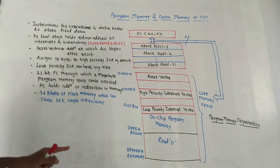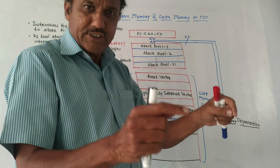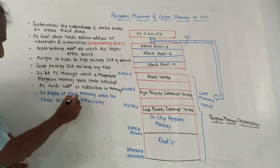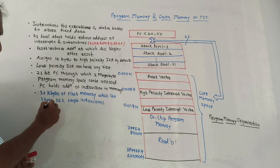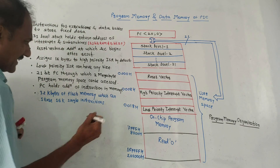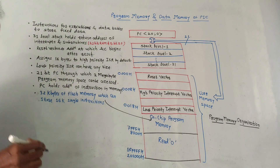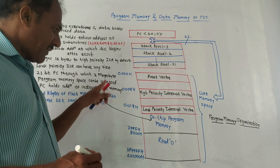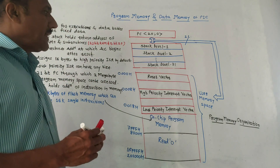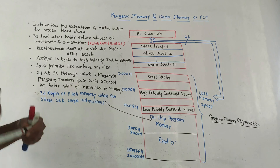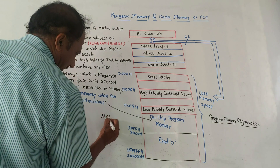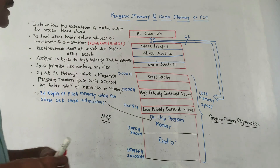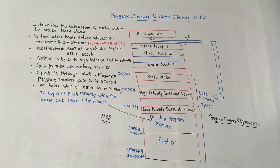There is 32 kilobytes of flash memory on chip, which can store 16K single-word instructions. The remaining space is a no-operation area, meaning it is an unimplemented area. This covers the program memory organization of PIC 18F.